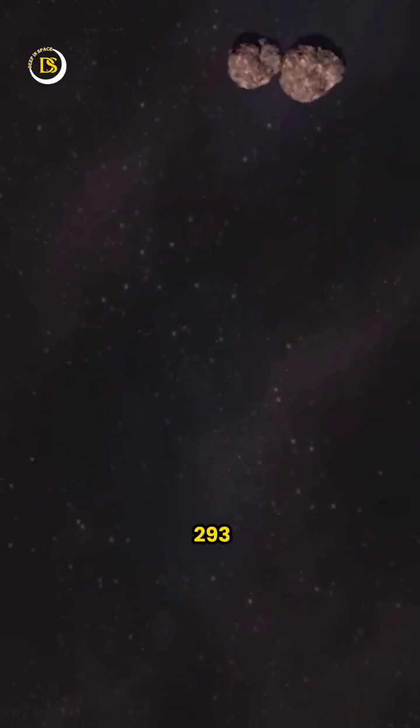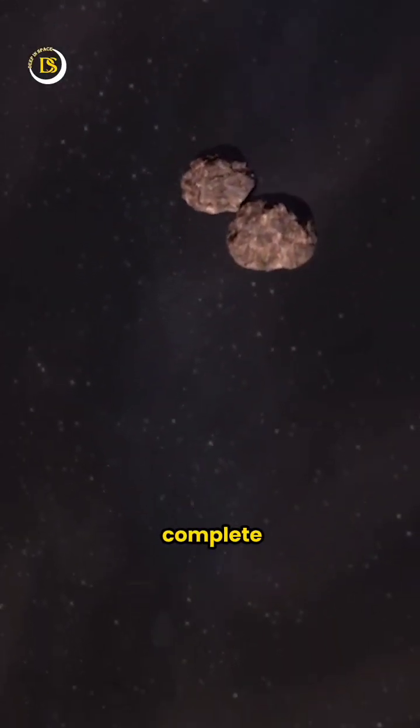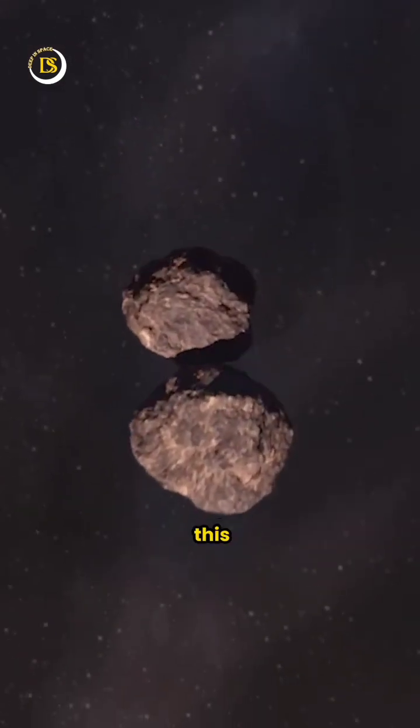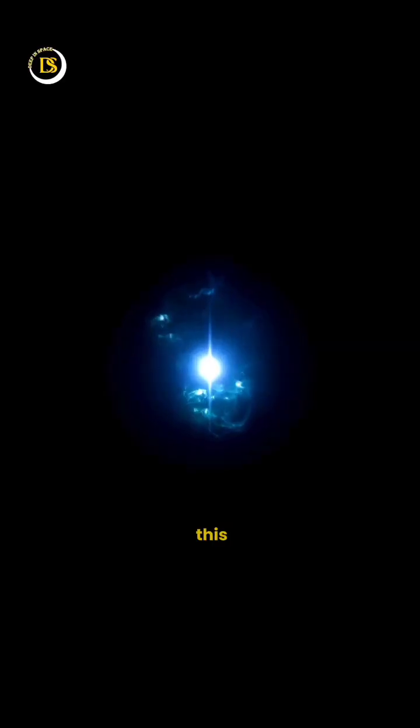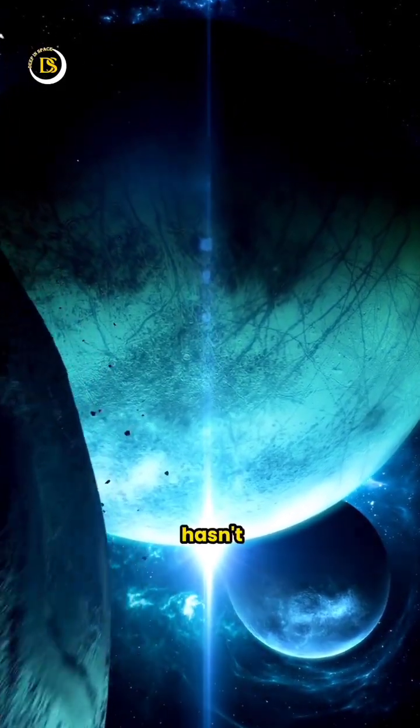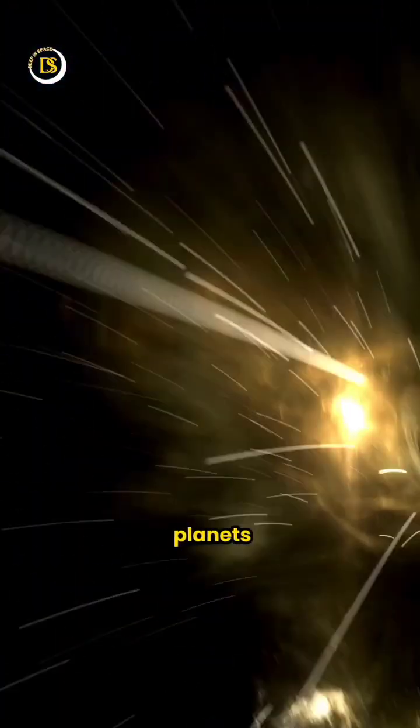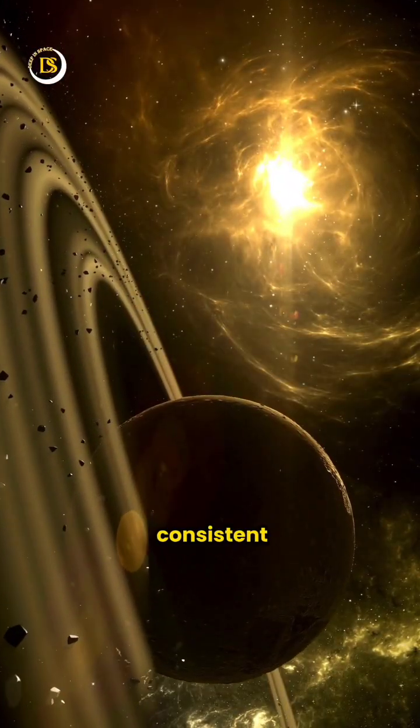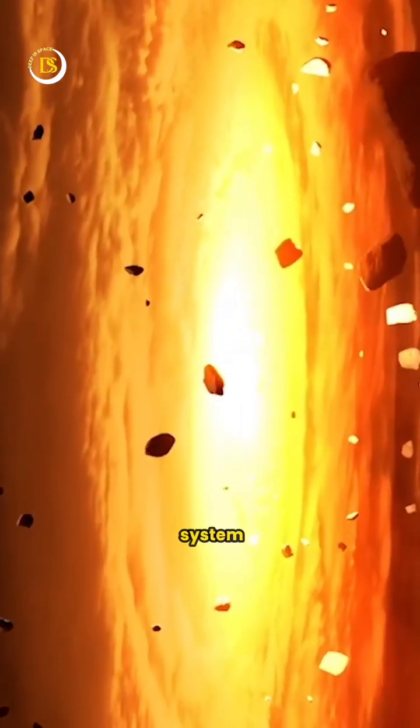It takes about 293 earth years for Arrokoth to complete one trip around the sun because it has this almost circular orbit. That stable orbit means it hasn't been influenced by any bigger planets. It's been hanging out at a consistent distance from the sun since our solar system formed.